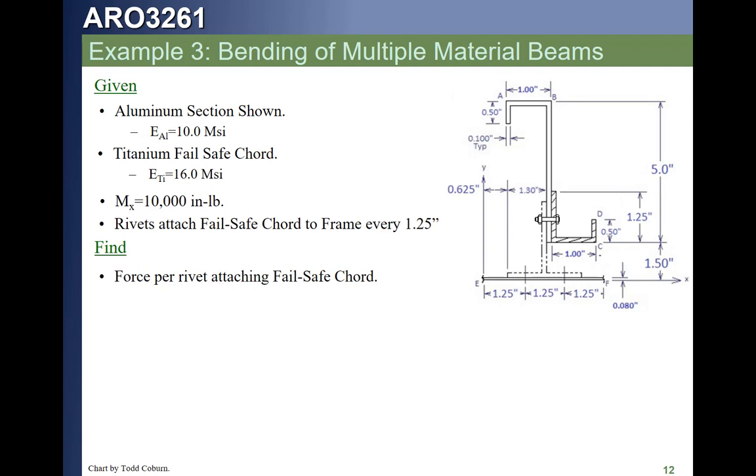And then if we're looking for the load per fastener that attaches the fail safe cord, the fail safe cord is shown colored. Once we have the I of the total cross section and the shear on the total cross section, all we need to do is calculate the force going through these nails by calculating the first moment of the shaded area.